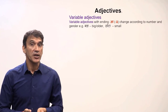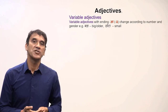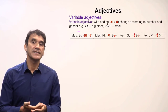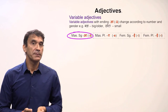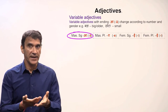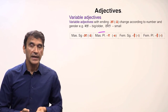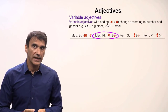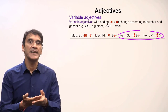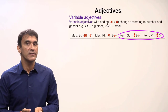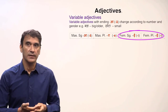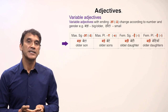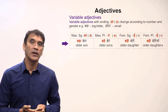Let's take variable and invariable adjectives separately in detail, starting with variable adjectives. As mentioned, variable adjectives change according to number and gender. The masculine singular form ends in -a, it becomes -e in masculine plural, and it becomes -i in feminine singular and plural. Let's take the adjective 'bada' in all its forms.